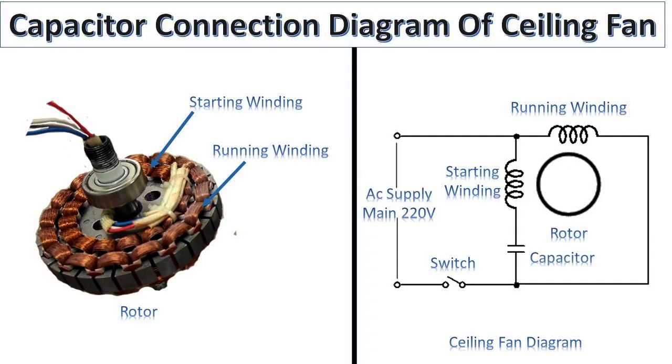Starting the motor: when you turn on a ceiling fan, the motor needs an extra boost to overcome inertia and start rotating. The capacitor provides a high voltage jolt of electricity to the motor, which helps it start spinning.